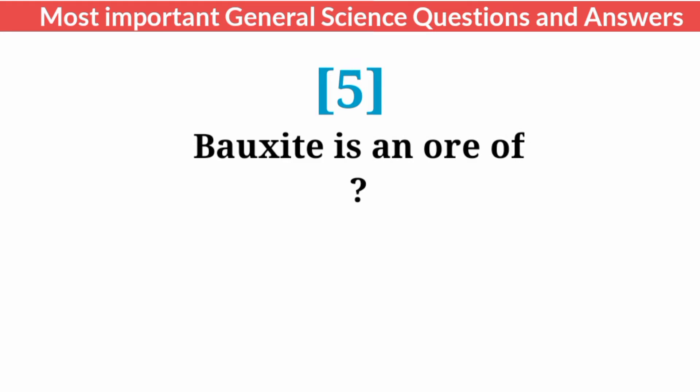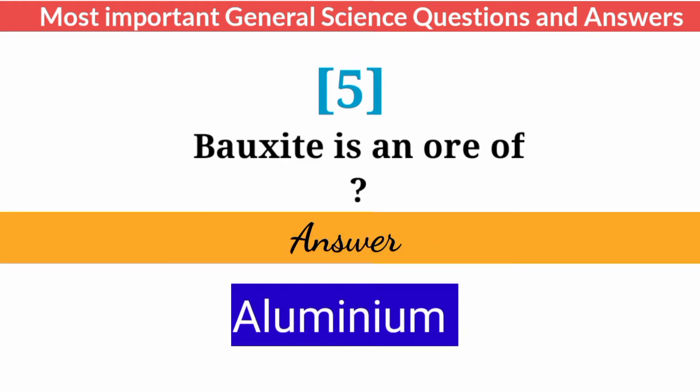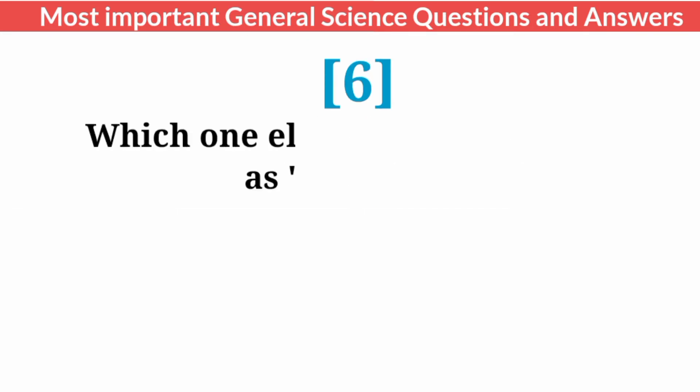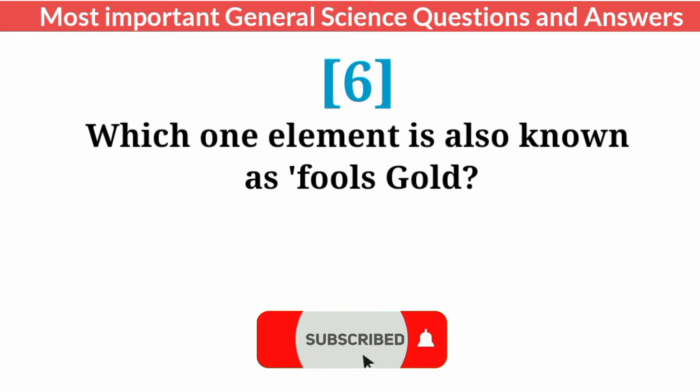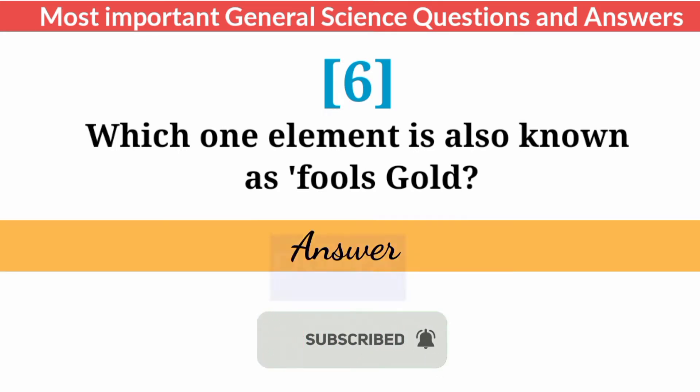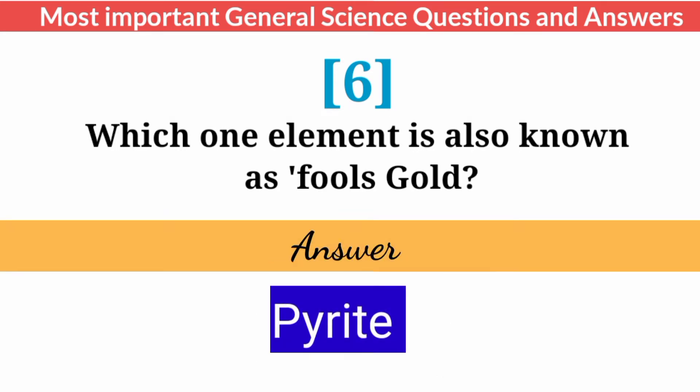Bauxite is an ore of? Answer: Aluminium. Which element is also known as Fool's Gold? Answer: Pyrite.